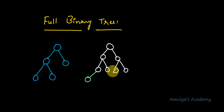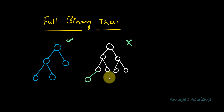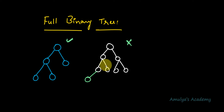A full binary tree is also called a strict or strictly binary tree — that is another name for it. So this tree is a full binary tree, and this other one is not — it is a binary tree but not a full binary tree.